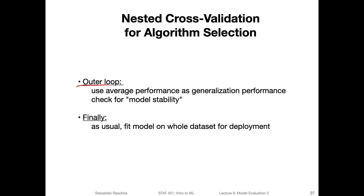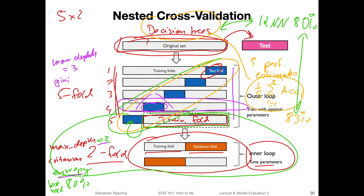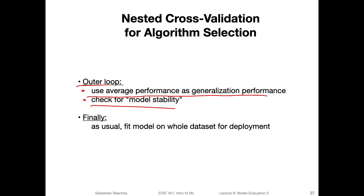To recap: the outer loop gives us the average performance as the generalization performance estimate. We can also use the outer loop to check for model stability by looking at the variance of these estimates and how different the settings are across folds. A large variance is concerning — for example, in a recommendation server scenario, we don't want an algorithm that is very unstable, sometimes performing well and sometimes poorly, because then some users have a great experience and others a very poor one. It would be better to pick an algorithm where settings vary less and performance estimates are more stable, even if the average performance is slightly lower. After completing this, we can fit the model on the whole dataset and get it ready for deployment.